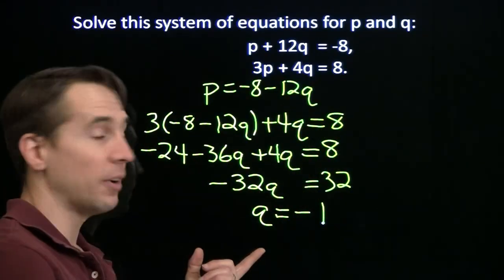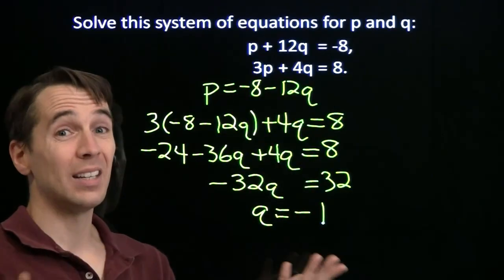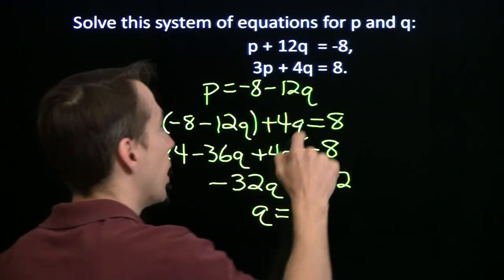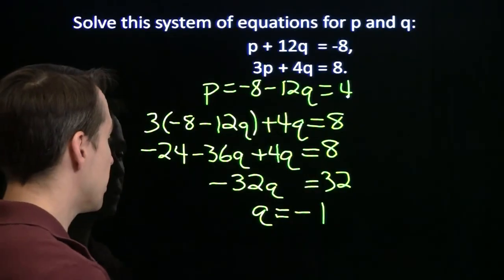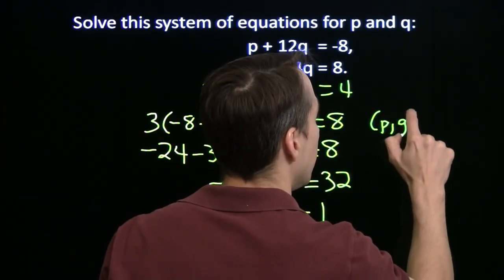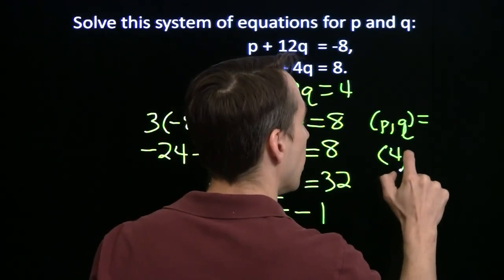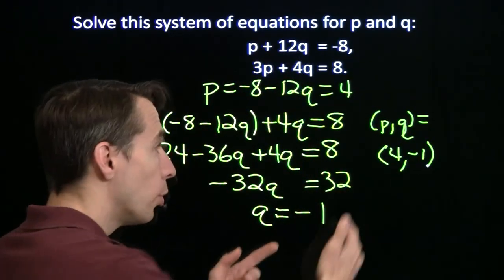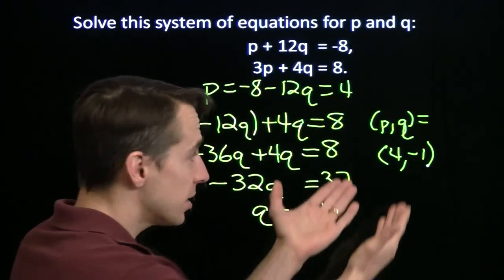Now we can come back up here and find p. We put the negative 1 in here for q. Minus 12 times minus 1. That gives us a plus 12. Then we subtract the 8, and we get 4. Once again, we can write this down as an ordered pair. The ordered pair p, q equals 4, negative 1. Again the order here is very important. The 4 goes with the p. The negative 1 goes with the q.